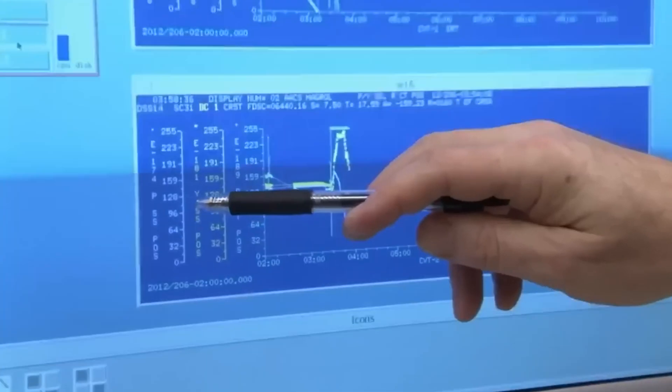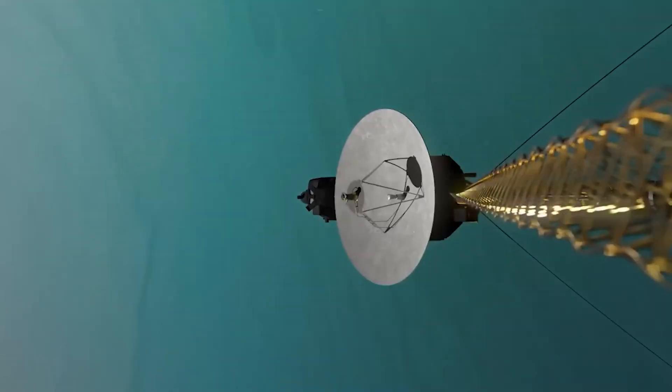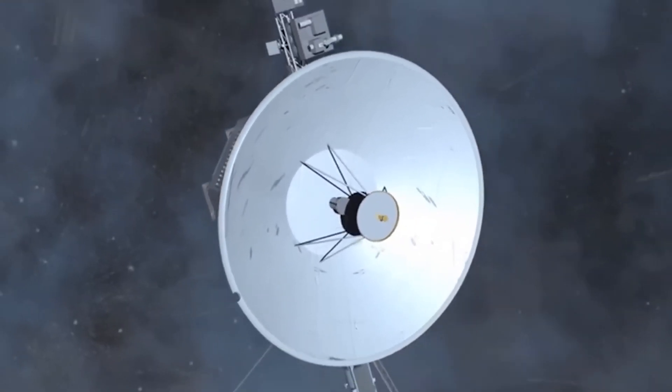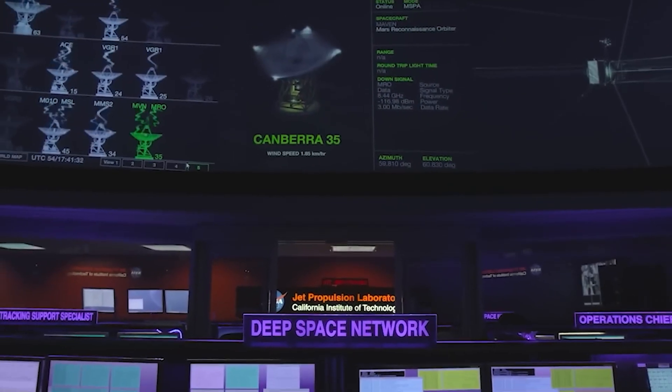Engineers suspect the deviation in the use of the non-operational computer on Voyager 1 was triggered by a faulty command received from another onboard system. This hypothesis suggests an underlying problem in the spacecraft's intricate computer network.